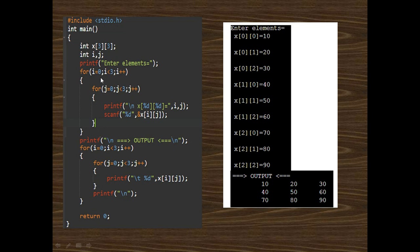When i=1, j=0, we take value 40. When i=1, j=1, value 50. When i=1, j=2, value 60. When i=2, j=0, value 70. When i=2, j=1, value 80. When i=2, j=2, value 90. After taking the inputs, we print the values using the next for loop.